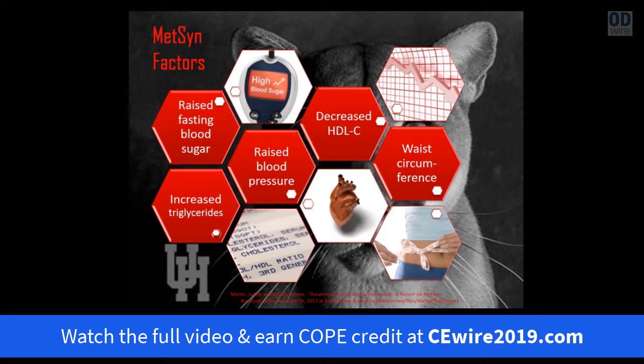The fifth criterion is waist circumference, which has two different levels: one for Asians and one for everyone else. For non-Asians, it's greater than 40 inches in men or greater than 35 inches in women. For Asians, it's greater than 35 inches in men and greater than 31 inches in women. The difference exists because Asians tend to store fat intra-abdominally rather than subcutaneously, and intra-abdominal fat is the most dangerous type to have.